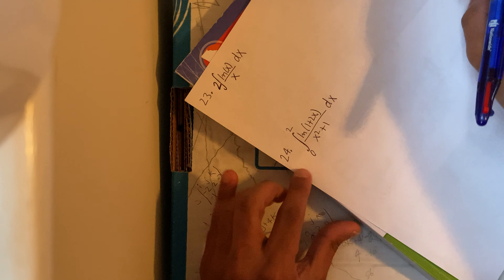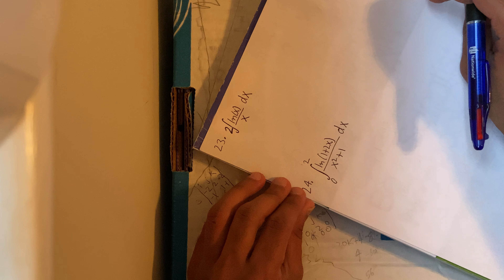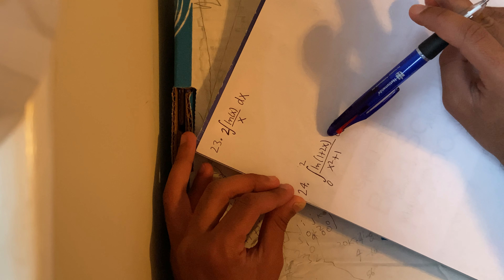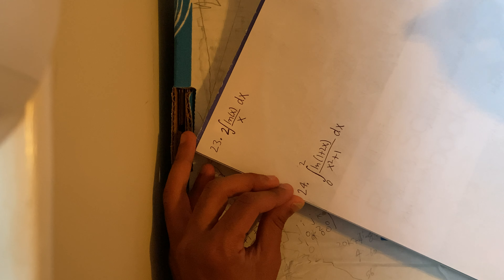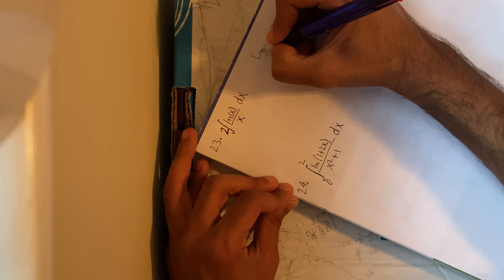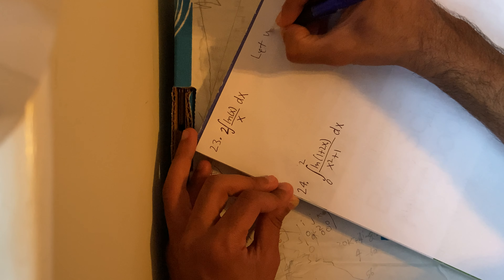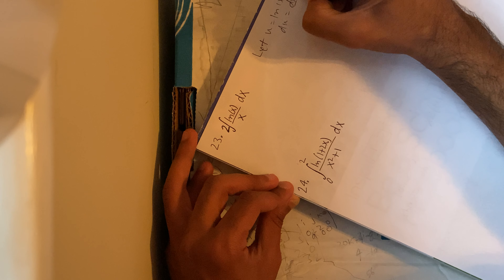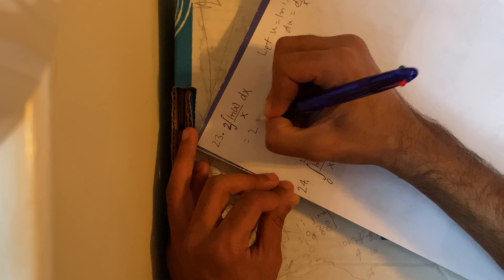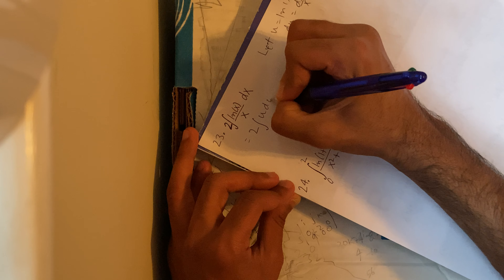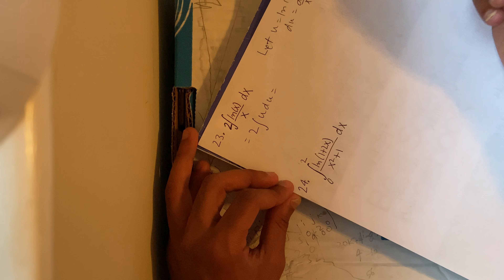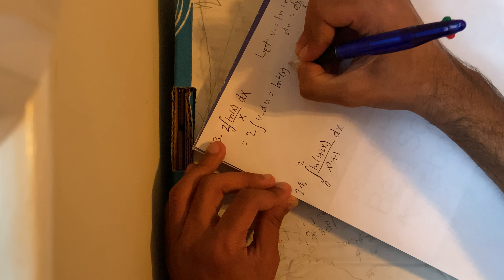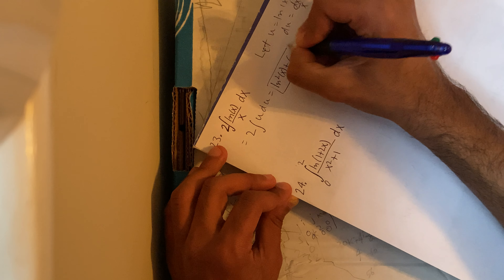Number 23: the integral of 2·ln(x)/x. I see it immediately — let u = ln(x), du = dx/x. This is 2 times the integral of u du, which is 2·u²/2 = u². So this integral is just ln²(x) plus c.